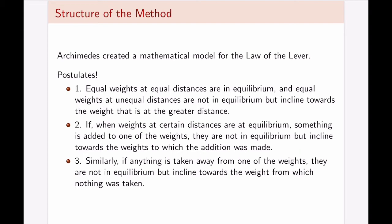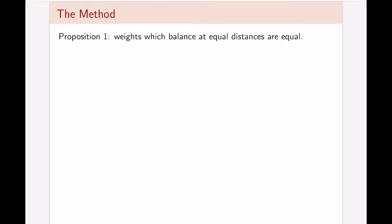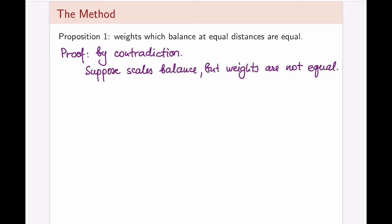Let's see how this works in the first proposition of the method of mechanical theorems. Proposition 1 of the method: Weights which balance at equal distances are equal. How are we going to prove this? Well, let's take a look. First of all, we're going to apply contradiction argument. Isn't this wonderful? Archimedes, 200 BC, proved by contradiction. If we're going to contradict something, we need to figure out what that is. And in this particular case, if we're looking to prove that weights which balance at equal distances are equal, we're going to suppose that scales balance, but weights are not in fact equal.